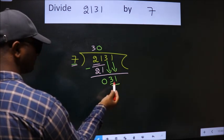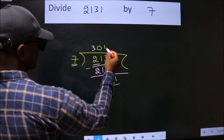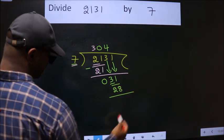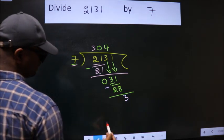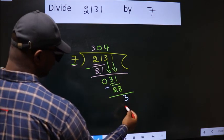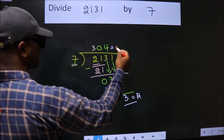So, 31. A number close to 31 in the 7 table is 7 fours 28. Now we subtract. We get 3. No more numbers to bring down, so we stop here. This is our remainder. This is our quotient.